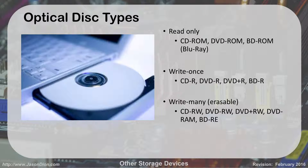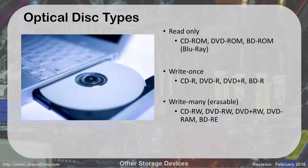There were two different competing standards for DVD — plus R and minus R — both storing the same amount of space. When you bought a DVD drive, some supported minus R and some supported plus R. These days they're all pretty much dual compatible, but back when they first came out you had to buy the right drive and the right disk. Also, if you have a Blu-ray disk, it can backwards-read DVDs and CDs. If you have a DVD, it can read CDs or DVDs. If you have a CD, it only reads CDs.